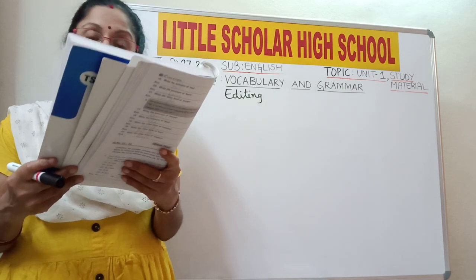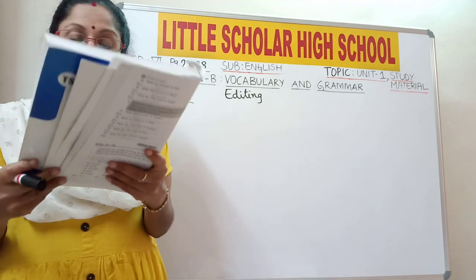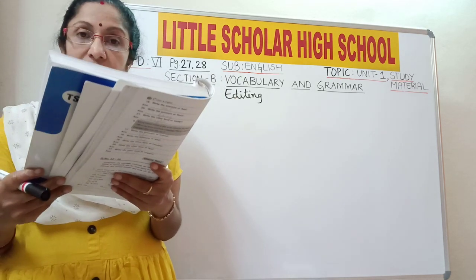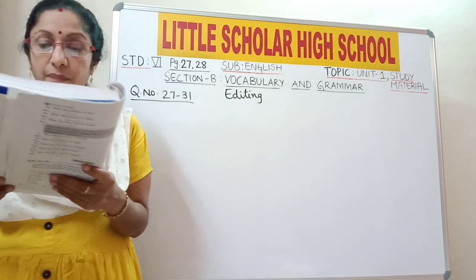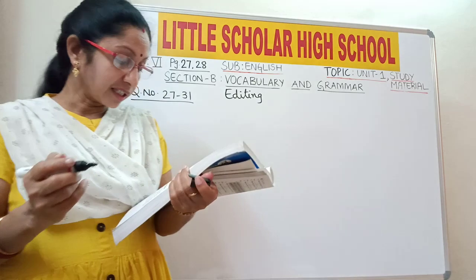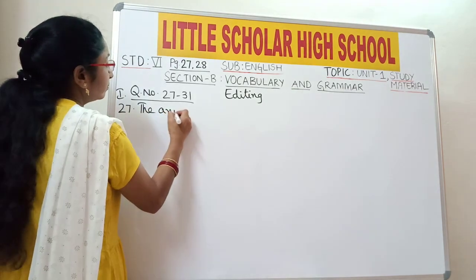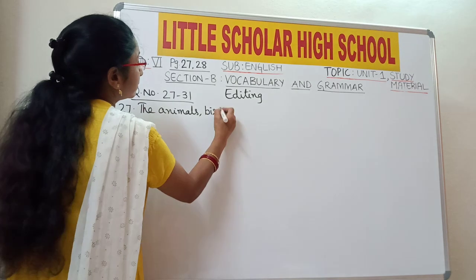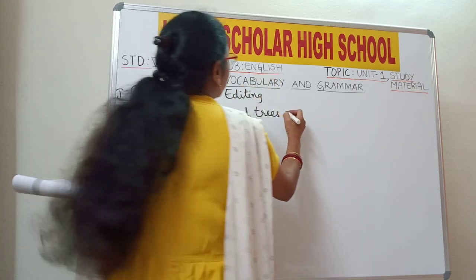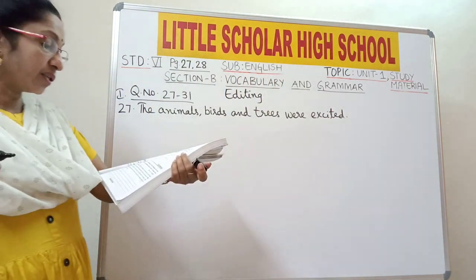Here we are talking about the animals, birds and trees. 'Were' is a plural helping verb used in the past tense. 'Was' is a helping verb used for singular subjects, and 'were' is for plural subjects in the past tense. So here the verb 'excites' should be changed to 'excited'. Question 27 answer: 'The animals, birds and trees were excited.' The word 'excites' is replaced with 'excited'.